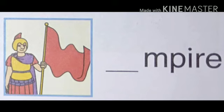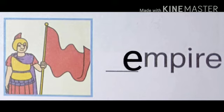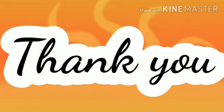Children, the word is empire. Empire. So what's the beginning sound of this word? Empire — E. So what are you going to write there? Letter E. Correct. Write it down, children. Thank you, children. Stay home, stay safe, and do your work properly. Your exam is there. Okay? Bye.